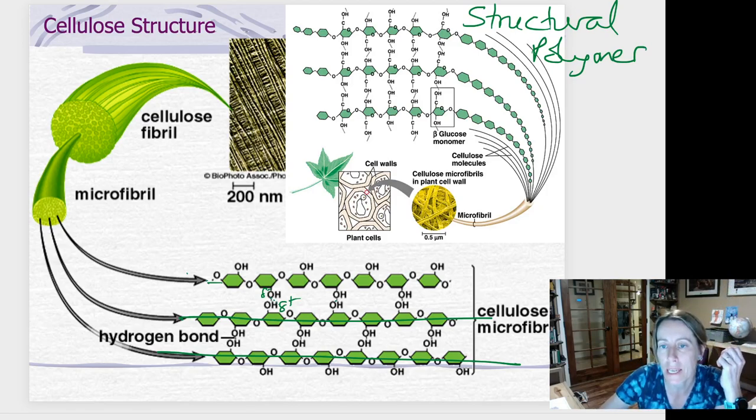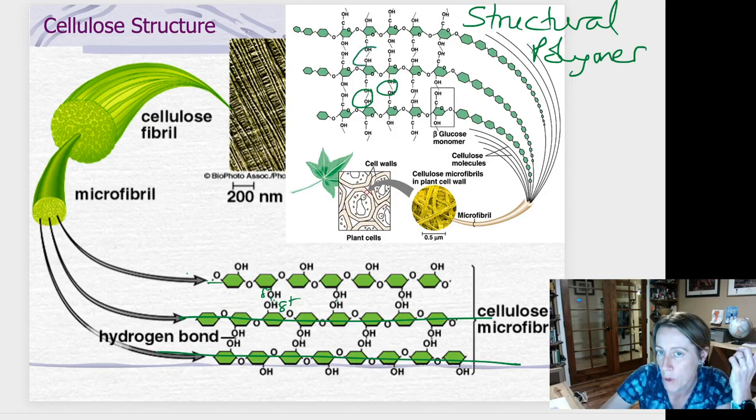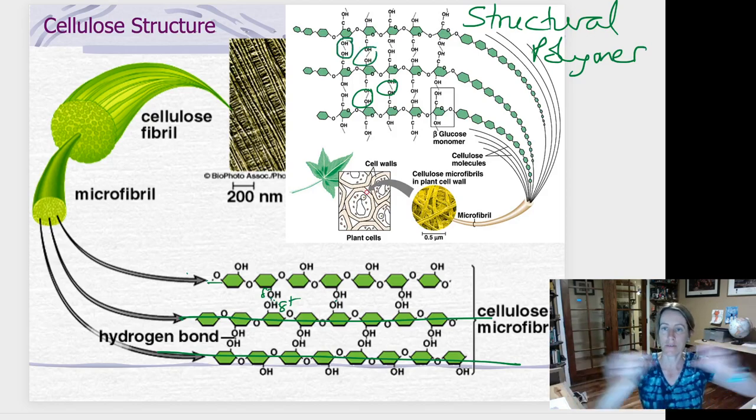And you can maybe see it a little better on this diagram here, you can see the dotted lines. Because remember, these are not covalent bonds. They're not permanent attachments. They're just weak attractions between these individual chains.